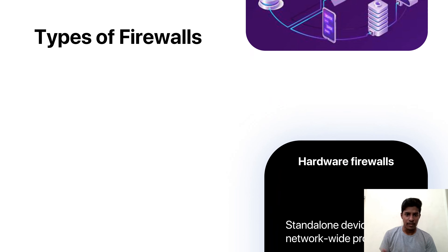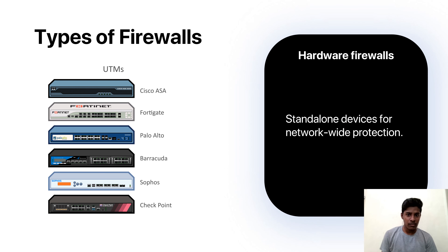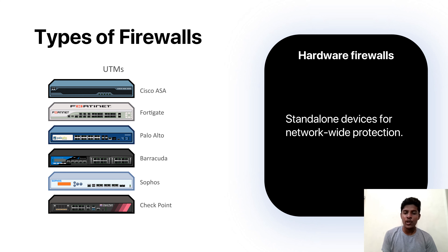Now let's look at hardware firewalls. When it comes to network security, we have these essential guardians called hardware firewalls. Imagine them as bouncers at the entrance of a club, but for your digital space. Unlike software firewalls that run on your computer, hardware firewalls are dedicated devices that sit between your internal network and the outside world, typically at the point where your network connects with the internet. They scrutinize every piece of data trying to get in or out. What makes hardware firewalls special is that they operate independently of your computer's operating system, providing an additional layer of defense. They use predefined rules to filter traffic, blocking anything suspicious or unauthorized, adding an extra barrier and keeping your data safe.